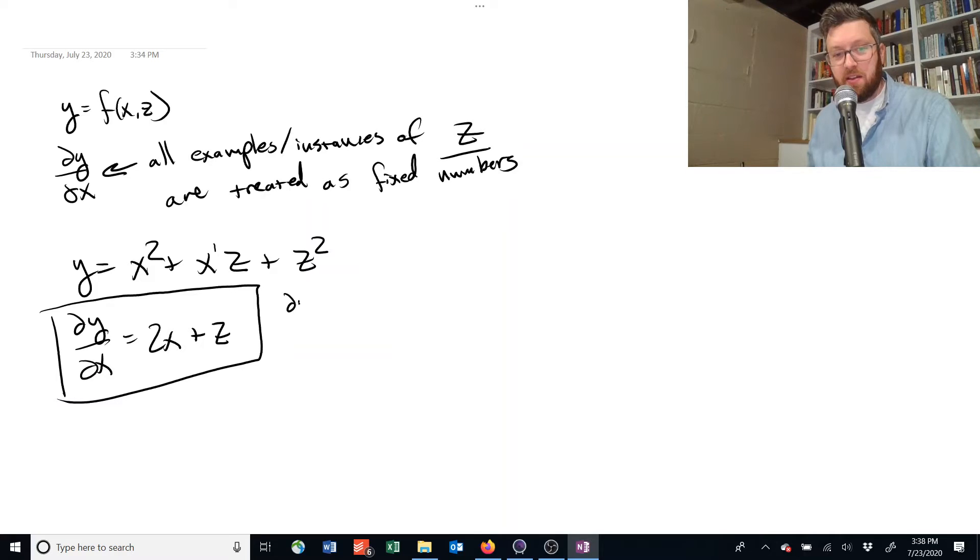We can ignore it, because it has no effect on what happens to y when you change x by a little amount, which is what the derivative is really trying to tell us. We could also find the partial derivative of y with respect to z. And now this first term has no z's in it, so if we make small changes to z, this has no effect on y. So we ignore it. It has 0 effect.